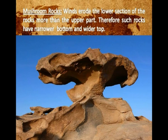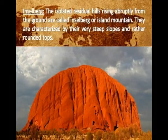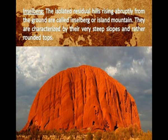Mushroom rocks: winds erode the lower section of rocks more than the upper part; therefore such rocks have a narrower bottom and wider top. Inselbergs are isolated residual hills rising abruptly from the ground, also called Island Mountains, characterized by very steep slopes and rather rounded tops.